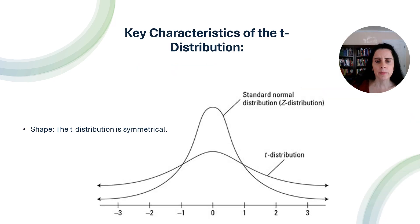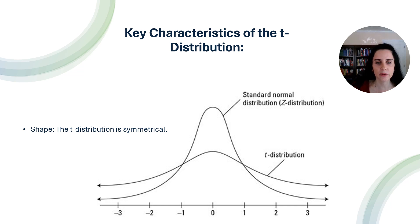In terms of shape, the T-distribution is symmetrical, just like the normal distribution. However, it has heavier tails, which means that it is more prone to producing values that fall far from its mean.